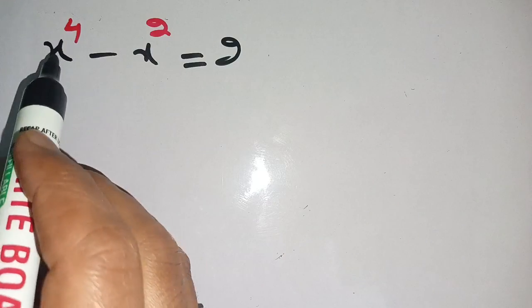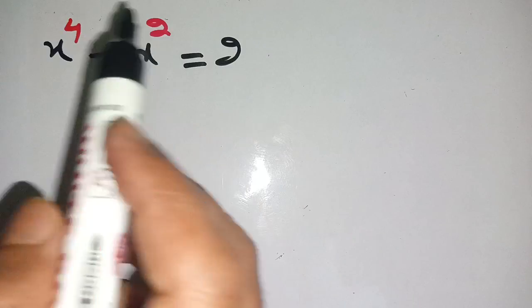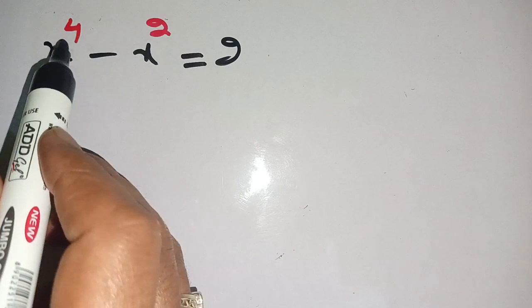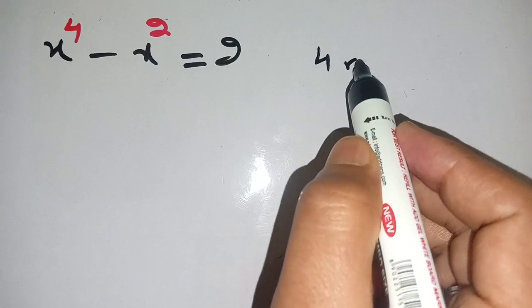Hello everyone, in today's video we are going to solve this equation x power 4 minus x square is equal to 2. Let us solve this. Here the highest degree is 4, which means that it has at least 4 roots.